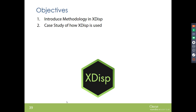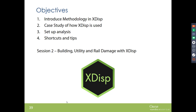Summarising today's session: the methodology of XDISP was introduced, a case study of its use in industry was presented, an analysis was set up live, and shortcuts and tips were shared along the way. The second session at the end of the month will cover building, utility, and rail damage assessment — using this base file to set up a building, utility, and rail track, then run the damage analysis and go through the theory. A video recording of today's session will be made available for sharing with colleagues.